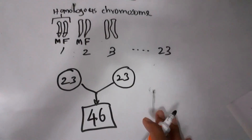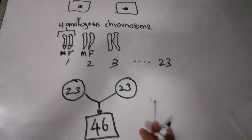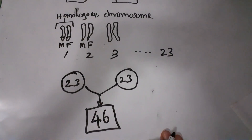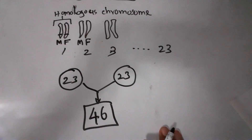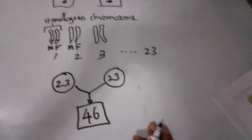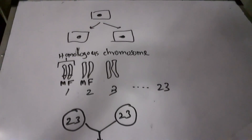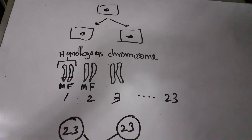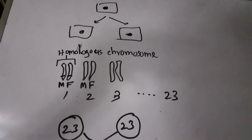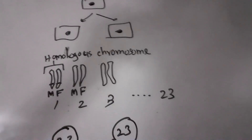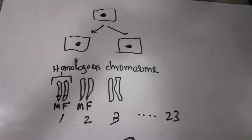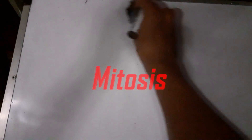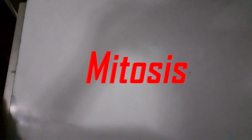These are the main concepts you should know. When cell division is considered, there are two main types: one is called mitosis, and another one is called meiosis.